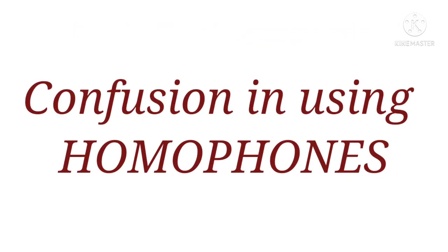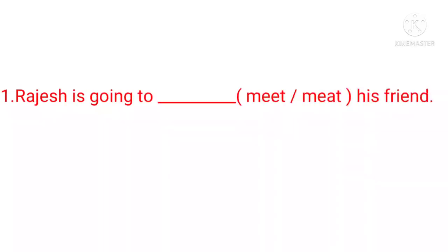Now, we see how homophones confuse us while using them in sentences. For example: Rajesh is going to (meet / meat) his friend. Two homophones are given: M-E-E-T, meet, and M-E-A-T, meat. Which is the right option for the blank? Yes, you are right. The first word, M-E-E-T, meet, is the right answer.